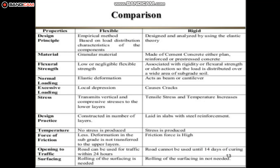Comparing flexible and rigid pavement: first, design principle — flexible pavement uses empirical methods based on load distribution characteristics of components, while rigid pavement is designed using elastic theory. Second, materials — flexible pavement uses granular materials, while rigid pavement is made of cement concrete, either plain, reinforced, or prestressed. Third, flexural strength — flexible pavement has low or negligible flexural strength, while rigid pavement is associated with rigidity, fracture strength, and slab action, distributing load over a wide area of subgrade soil.